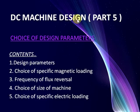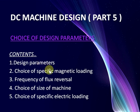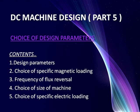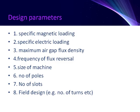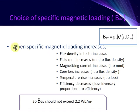DC machine design part 5: choice of design parameters. Contents: 1) design parameters, 2) choice of specific magnetic loading, 3) frequency of flux reversal, 4) choice of size of machine, 5) choice of specific electric loading. Design parameters include: specific magnetic loading, specific electric loading, maximum air gap flux density, frequency of flux reversal, size of machine, number of poles, number of slots, field design example, number of turns, etc.